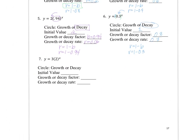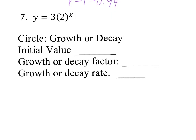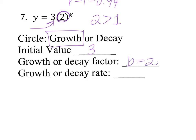Let's look at number 7. Is it growth or decay? What's b? b is 2. 2 is greater than 1, so it's going to be growth. Our initial value is what comes first, which is 3. Growth factor is just b, and b equals 2. And lastly, because it's growth, r equals b minus 1. So r equals 2 minus 1, which equals 1.